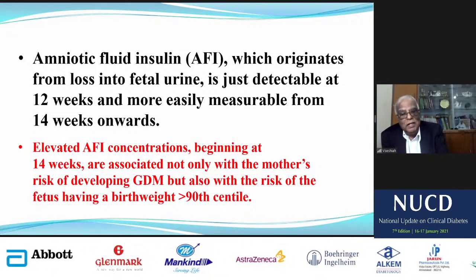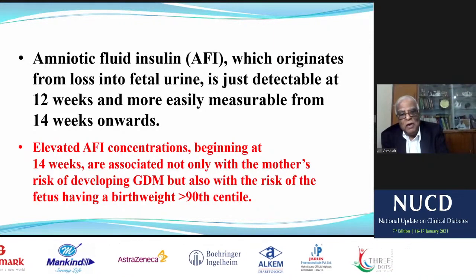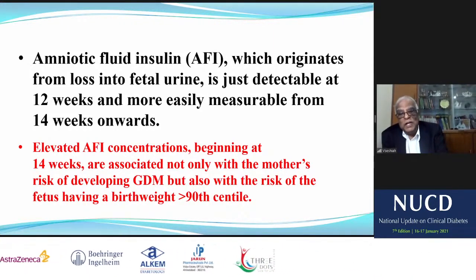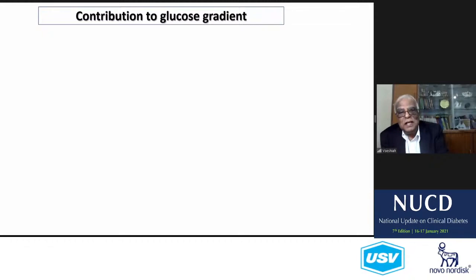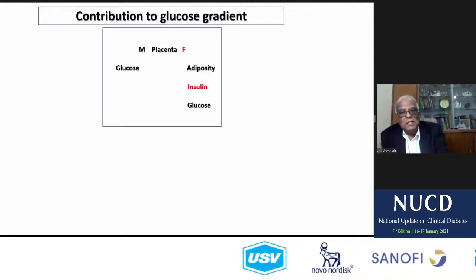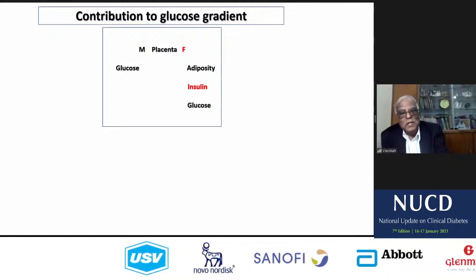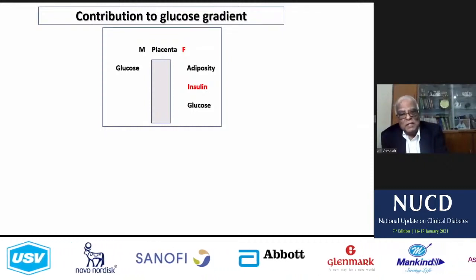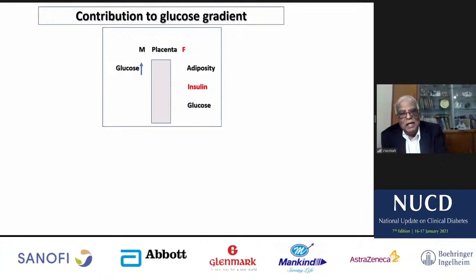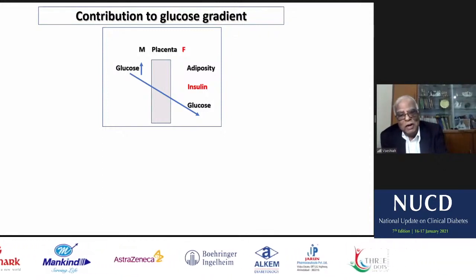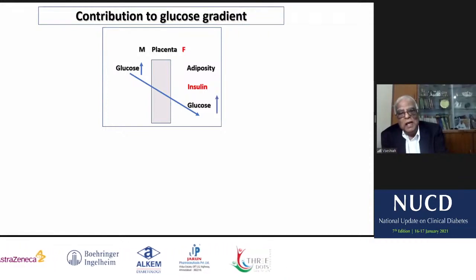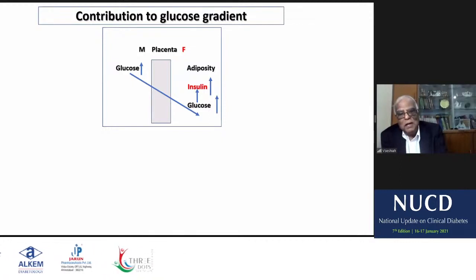Elevated amniotic fluid insulin concentrations, beginning at the 14th week, are associated not only with the mother's risk of developing GDM, but also with the risk of the fetus having a birth weight more than the 80th percentile. When maternal hyperglycemia crosses the placenta and goes to the fetal compartment, fetal glucose goes up. Because glucose is available in the fetus, insulin secretion goes up — hyperinsulinemia — and because there is hyperinsulinemia and hyperglycemia in the fetal compartment, the child puts on weight, adiposity, causing macrosomia.